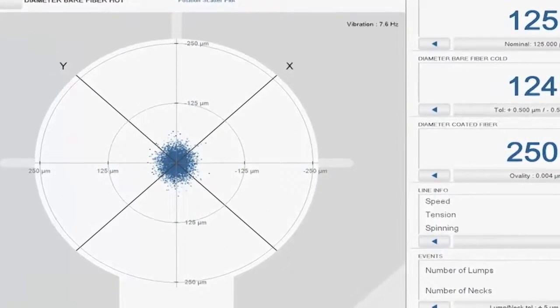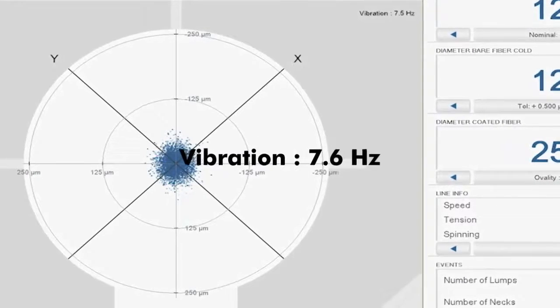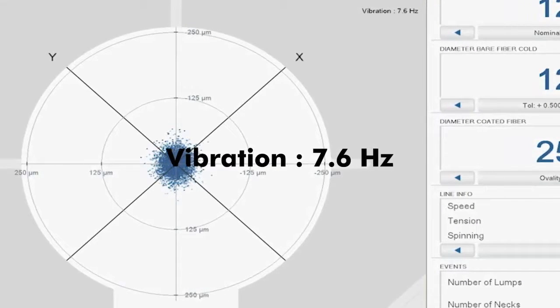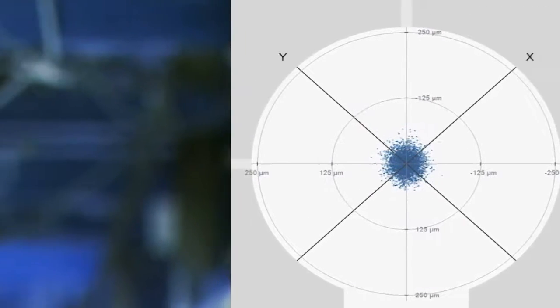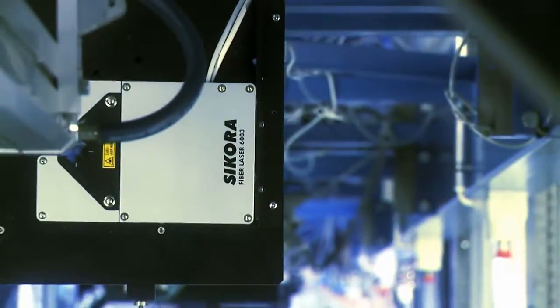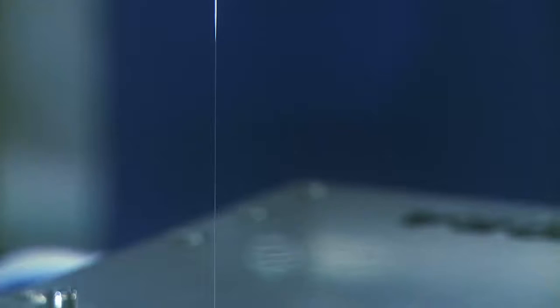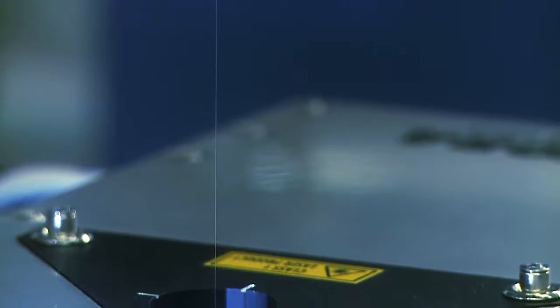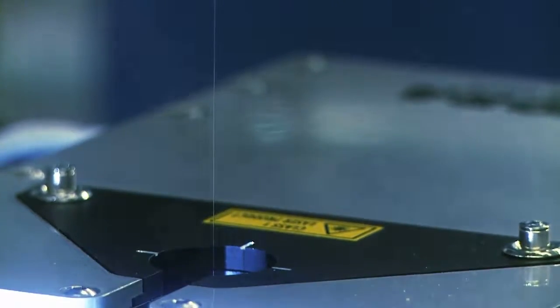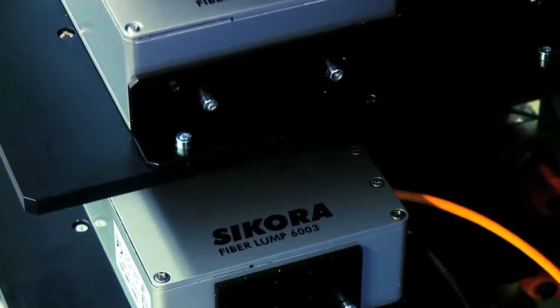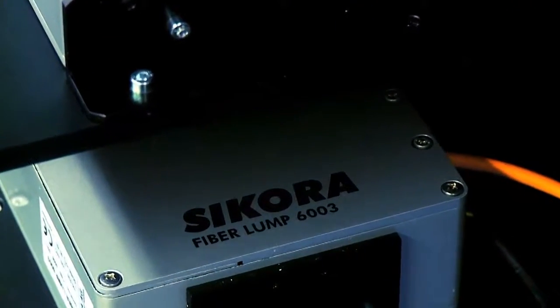In addition, the vibration frequency of the fiber is displayed. The devices of the Fibre series 6000 offer various interfaces to align control. Factory calibrated, they keep their accuracy over the entire life cycle. The optical measuring principle without moving parts assures a mean time between failure of 15 years.